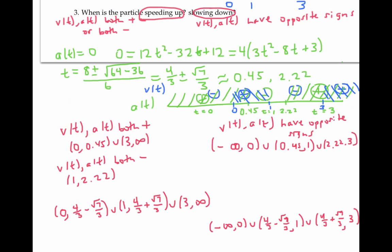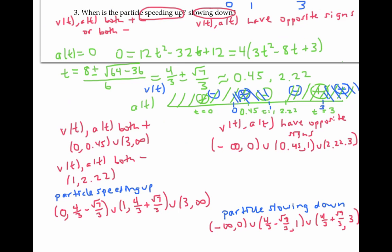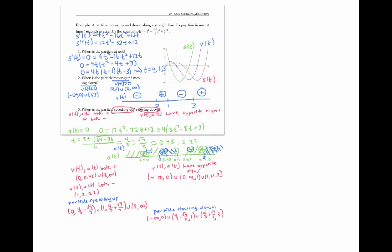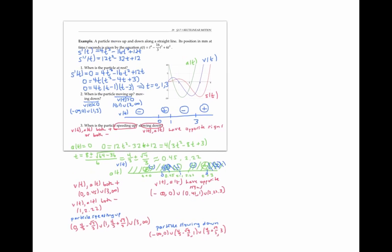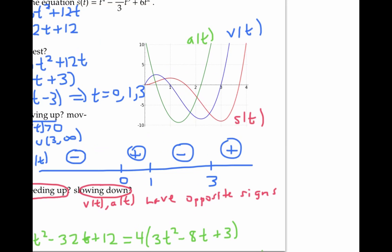Here's where the particle is speeding up, and here's where it's slowing down. We can check our work by looking at the graph of position: the particle speeds up where the position graph is getting steeper and steeper. The red graph gets steeper in those regions, just as we found algebraically.